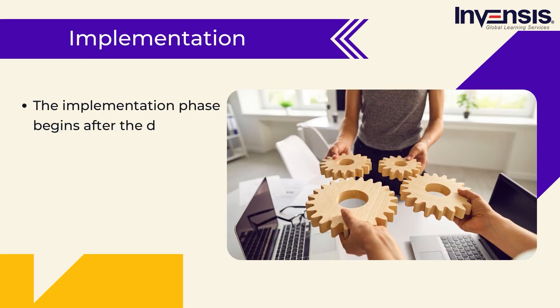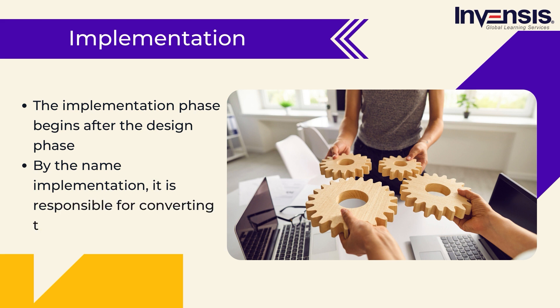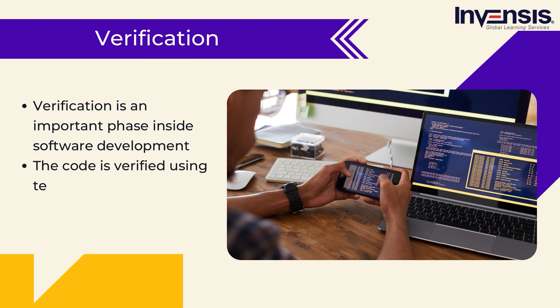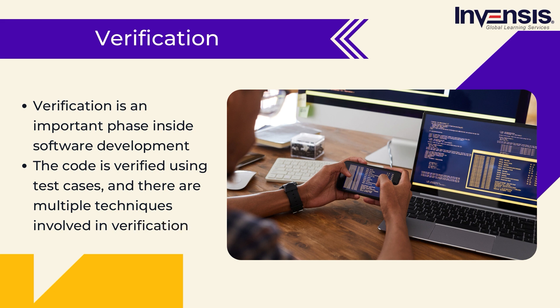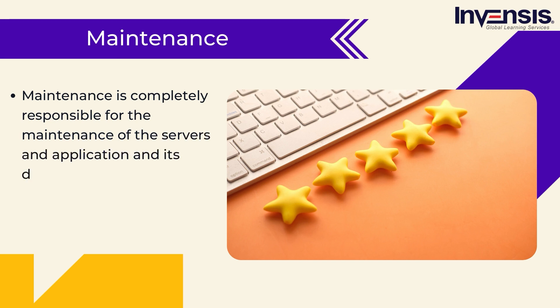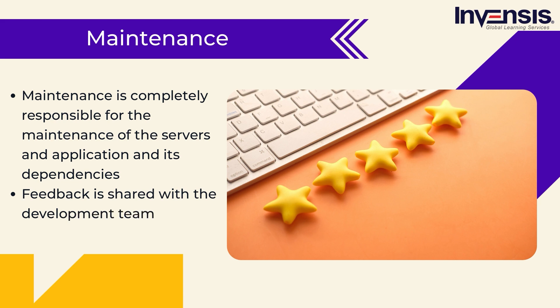Here the implementation phase begins — it is responsible for converting the designs into application code. The application code is created by the development team with all the functionalities. Post that, the code is sent to the operations team for testing, because we cannot move the application directly to the internet without validating the code, so here the verification phase begins. The code is verified using test cases, and there are multiple techniques involved in verification. If verification is passed, the code files are moved to the live server; if not, the code is sent back to the implementation phase. Assuming the code passes all test cases, the application is deployed over the internet. Then the maintenance phase starts, which is responsible for the maintenance of the servers, application, and its dependencies. Feedback is gathered and shared with the development team for rectification, and the process repeats for the entire development.